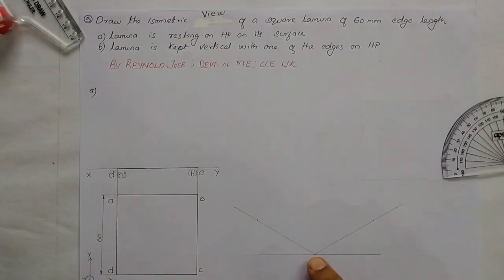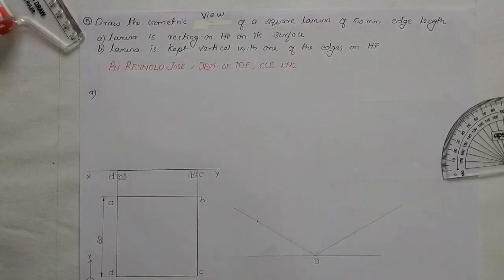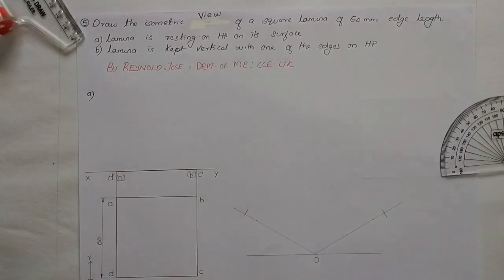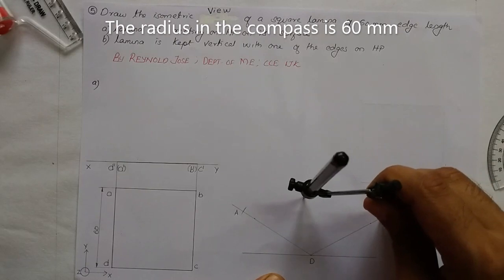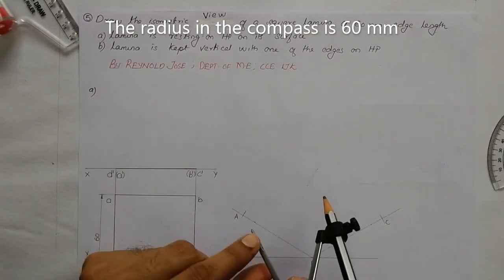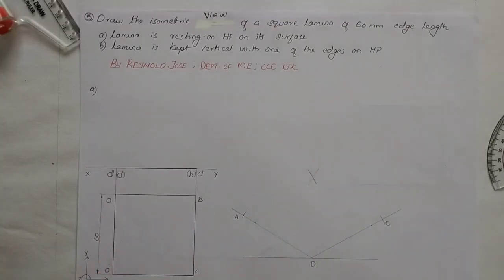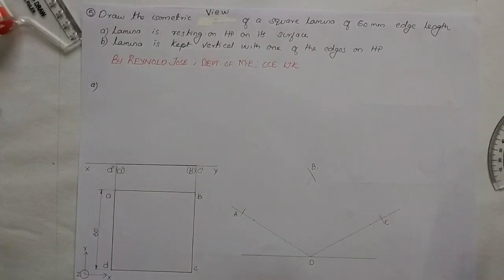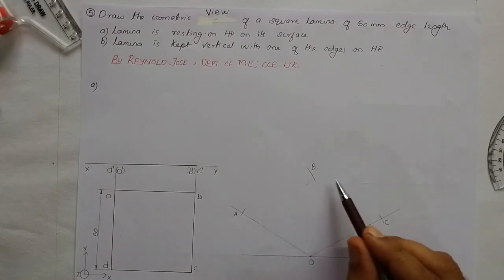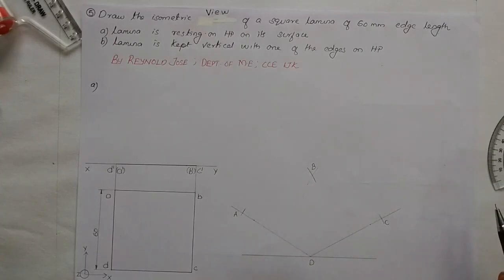We take 60 mm to the right and 60 mm to the left to get points C and A respectively. Along the base we also need point B. Since this is a square, using a compass we cut two arcs — one from point C and one from point A — and the meeting point gives us point B. These four points form the outline of the lamina, so we draw AB, BC, CD, and DA using thick lines.